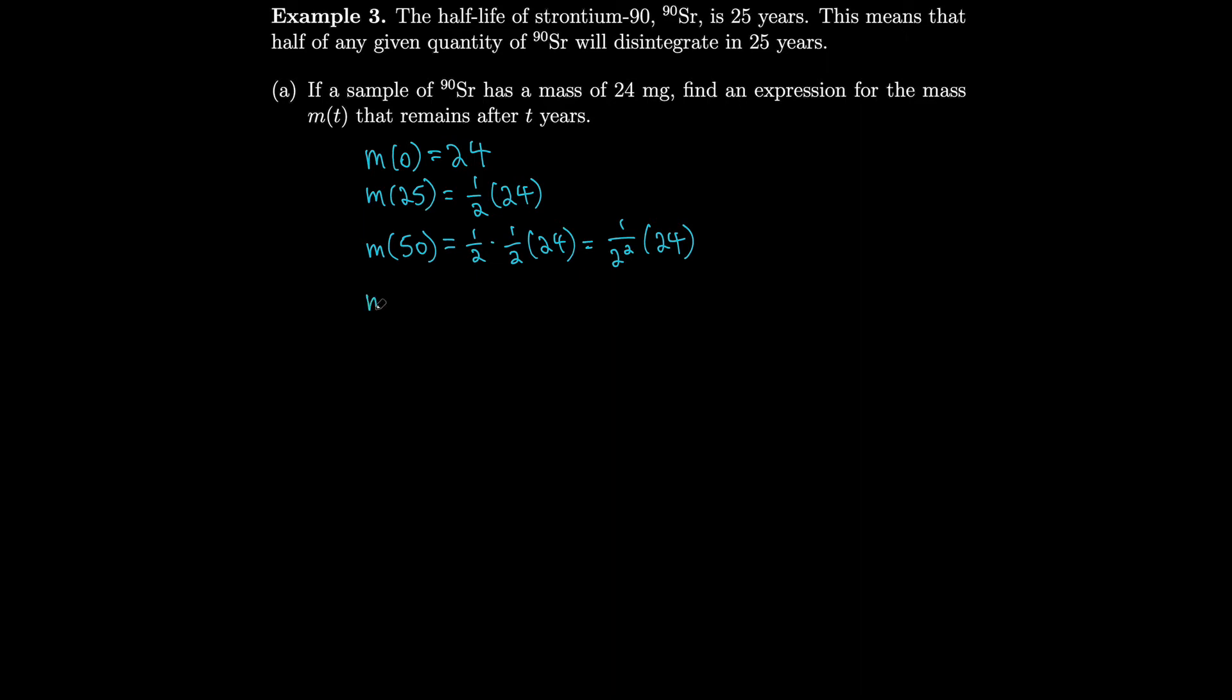If we go another half-life, we can look at m of 75, which will be half of m of 50. So it's half of 1 over 2 squared times 24, which is 1 over 2 cubed times 24. m of 100, same thing, half of m of 75. So it's half of 1 over 2 cubed. So it's 1 over 2 to the 4th times 24.